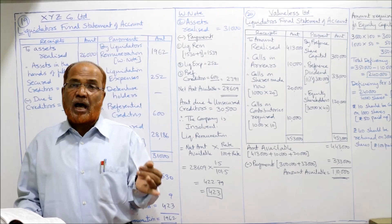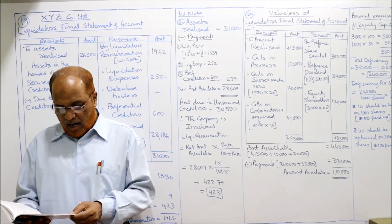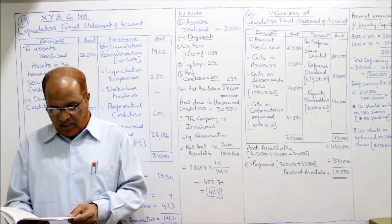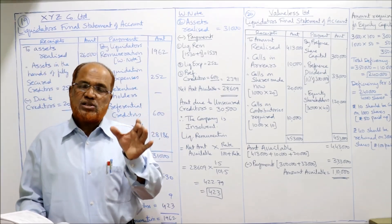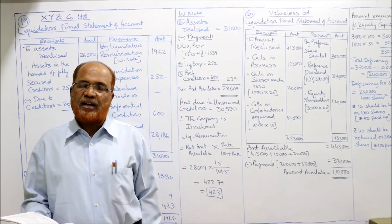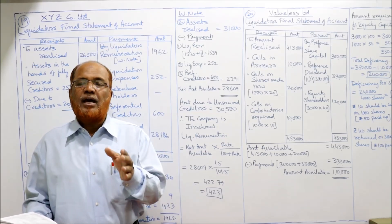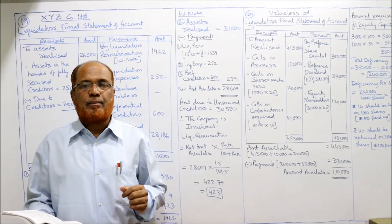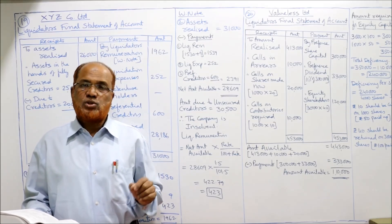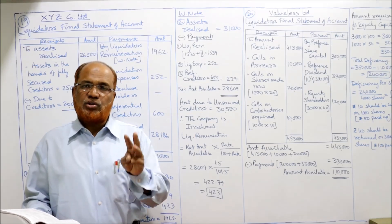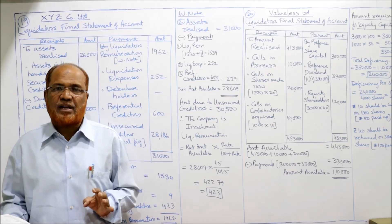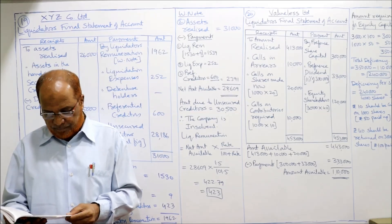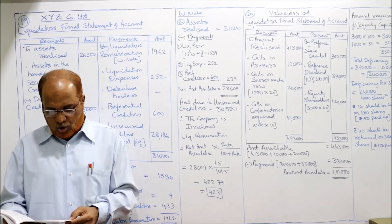The articles of association provide that any arrears of preference dividend must be paid in priority before any return of capital to equity shareholders. So the liquidator must pay 3,00,000 preference share capital plus 33,000 preference dividend before making any return to equity shareholders. You are required to prepare the liquidator's final statement of account showing available information.